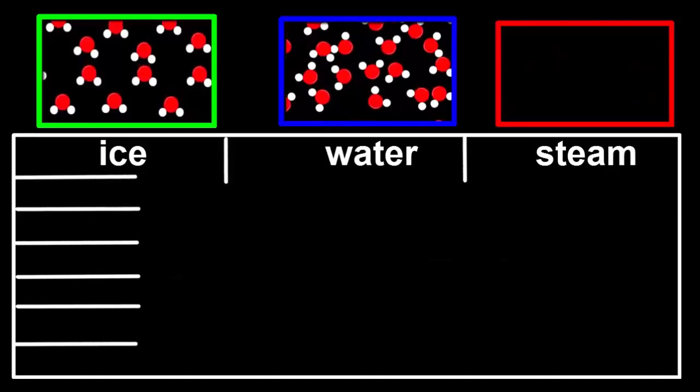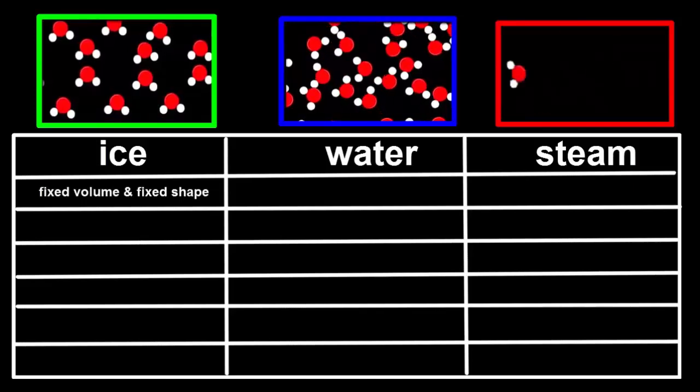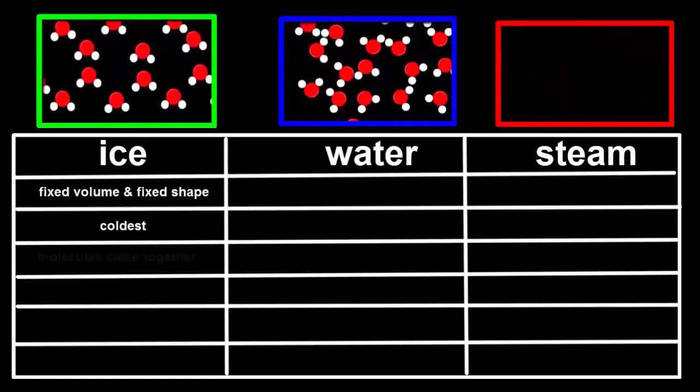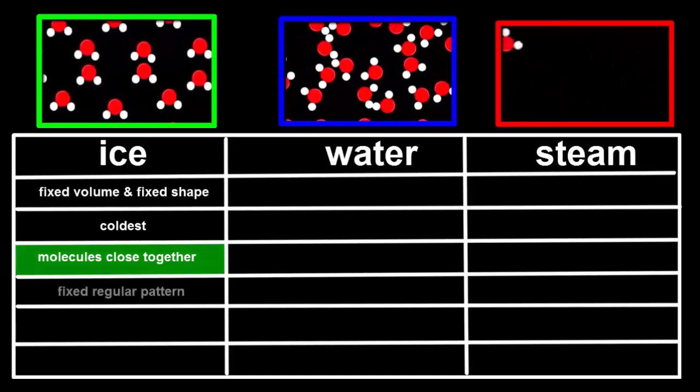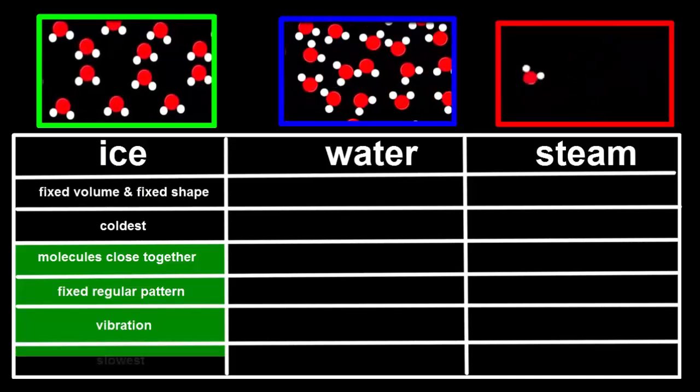So recapping, we can see that solids have both a fixed volume and a fixed shape, and they're the coldest state. If we could see their molecules, they would be closely packed together in a fixed, regular pattern, and vibrating backwards and forwards relatively slowly.